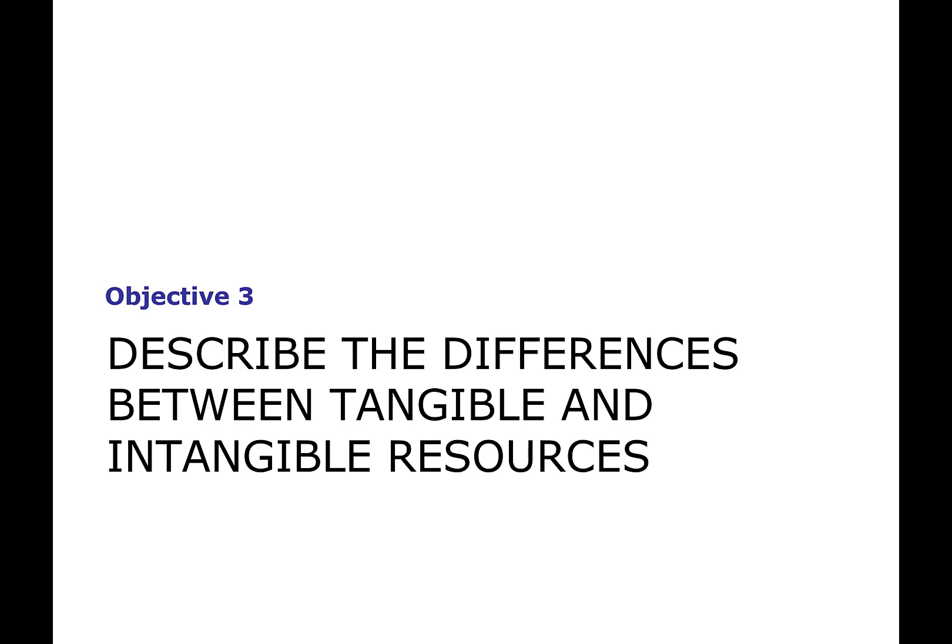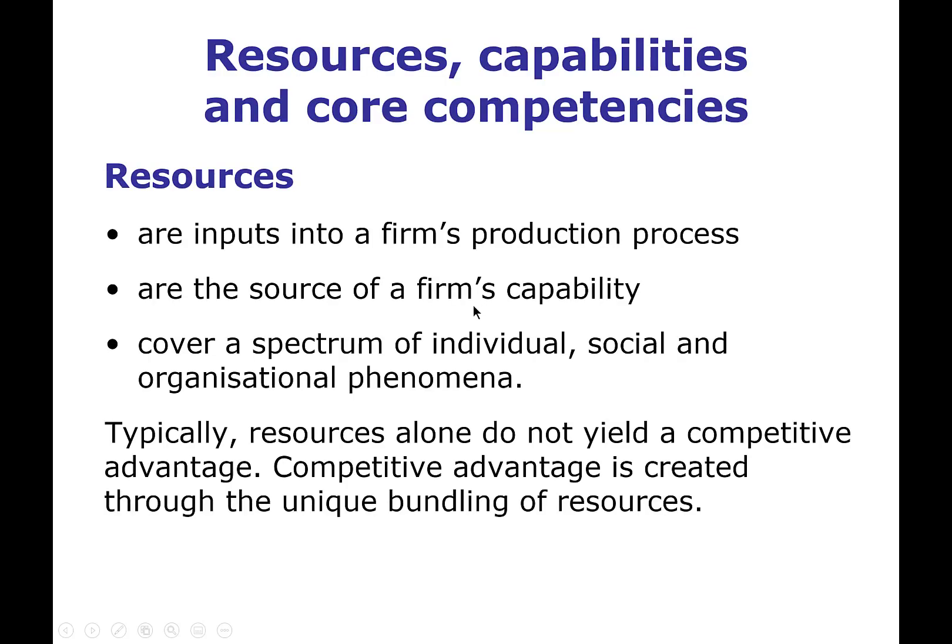Let's move on to Objective 3, where we'll discuss the differences between tangible and intangible resources, moving away from accounting terms toward strategic terms. Resources are inputs into a firm's production process — producing goods, services, or some combination. How you marshal and combine your resources leads you to having a capability to do something. Resources can be based on individual characteristics, social characteristics, or be an organizational phenomenon.